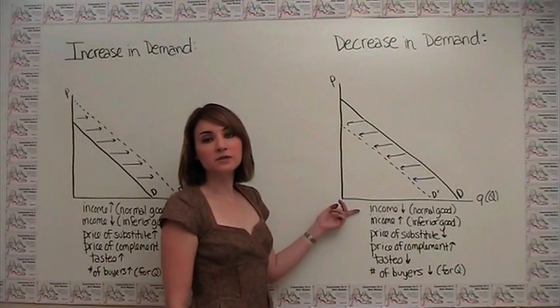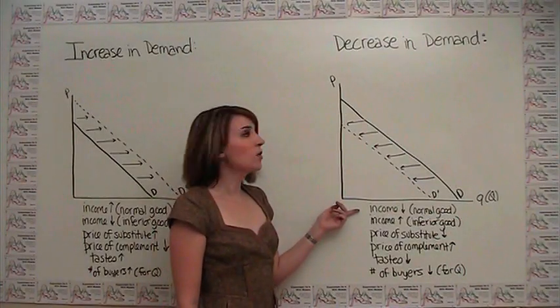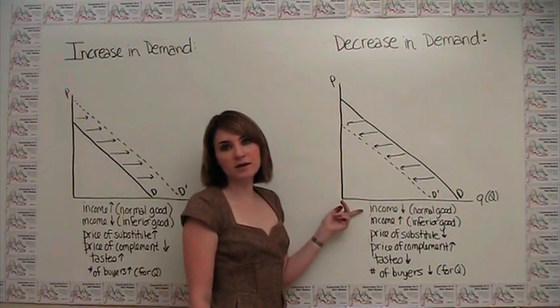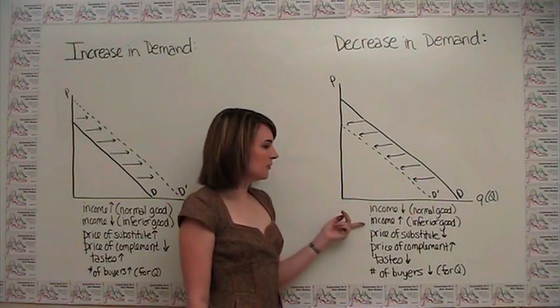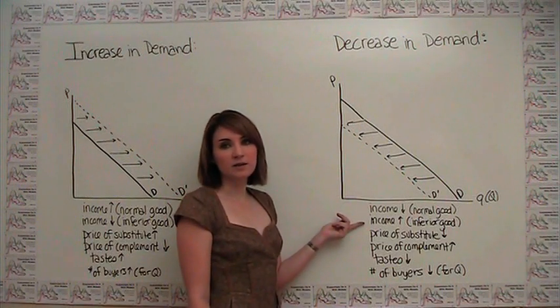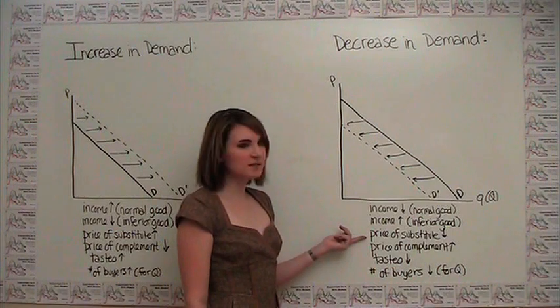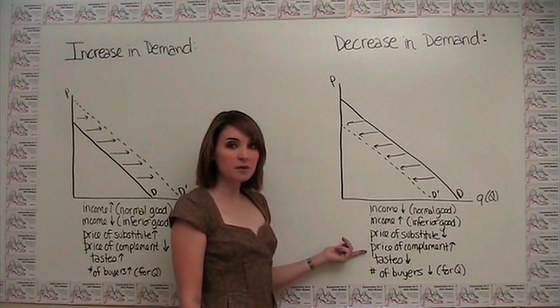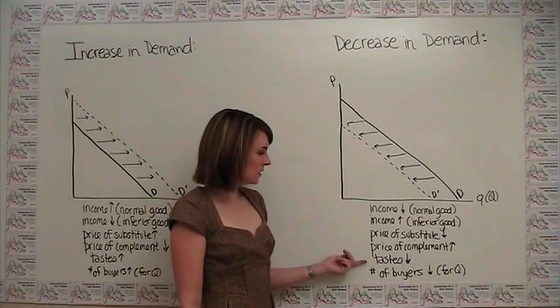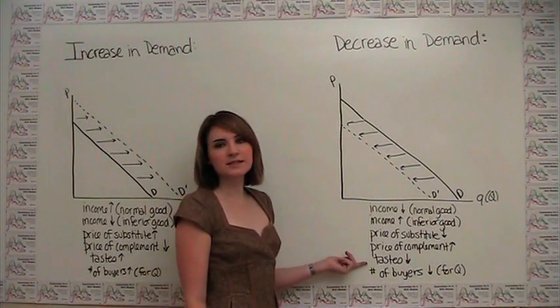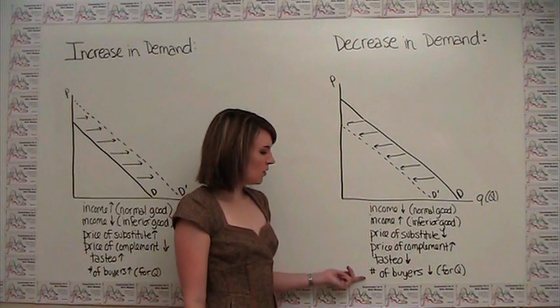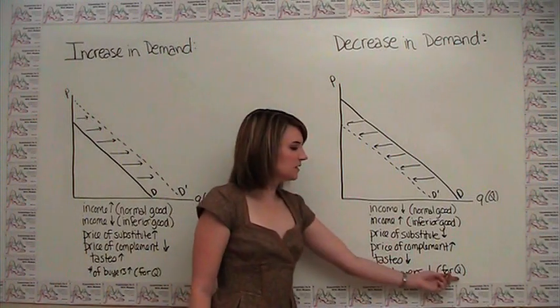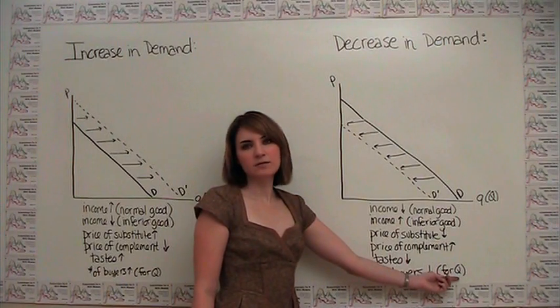On the other hand, we get a decrease in demand or a shift to the left in our demand curve if we have a decrease in income when we're talking about a normal good. If we have an increase in income when we're talking about an inferior good. If the price of a substitute decreases. If the price of a complement increases. If we have decreased taste for the particular item. Or if the number of buyers in our market decreases, we see that the market demand for the item decreases.